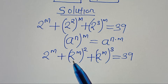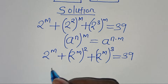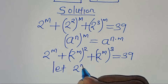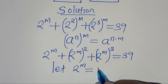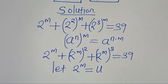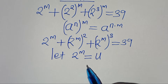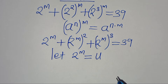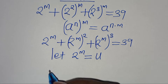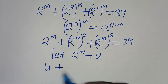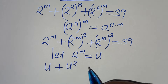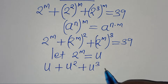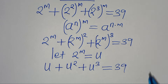Now 2 to the power of m is common here, so we can let 2 to the power of m be equal to u. Substituting u where we have 2 to the power of m, we now have u plus u squared plus u to the power of 3, this is equal to 39.